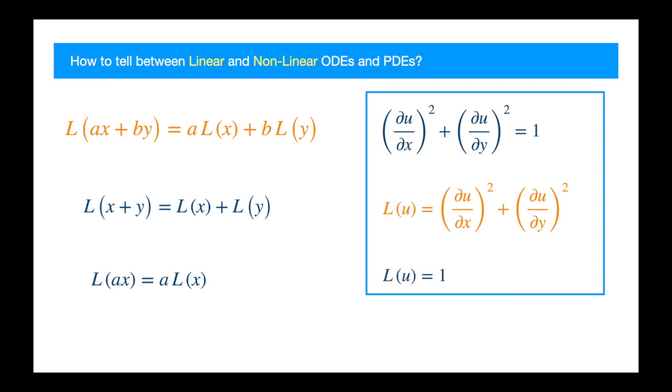Remember in the previous video, we said that this is an alternative way to represent a differential equation? Now, if we apply the test, we will see this is a nonlinear operator, because square does not preserve addition. Remember, a plus b squared equals a squared plus b squared plus 2 times a times b. So the 2ab is extra due to nonlinearity, and we conclude this is a nonlinear PDE.